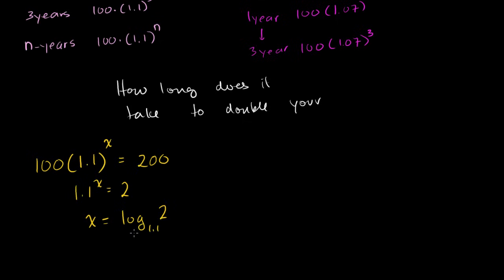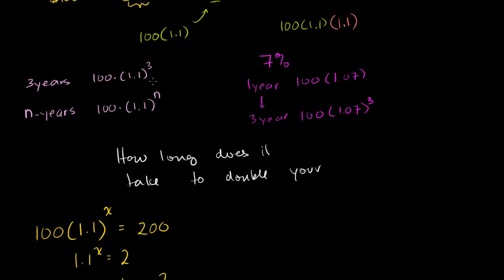You get x is equal to log base 1.1 of 2. And most of us cannot do this in our head. So although the idea is simple, how long will it take for me to double my money to actually solve it, to get the exact answer, is not an easy thing to do. You can just keep, if you have a simple calculator, you can kind of keep incrementing the number of years until you get a number that's close. But no straightforward way to do it. And this is with 10%. If we're doing it with 9.3%, it just becomes even more difficult.